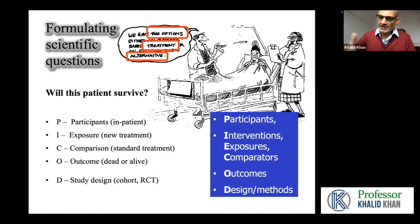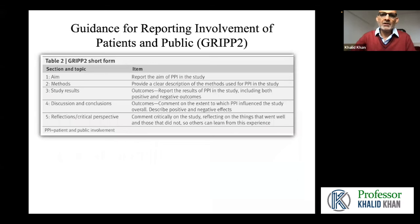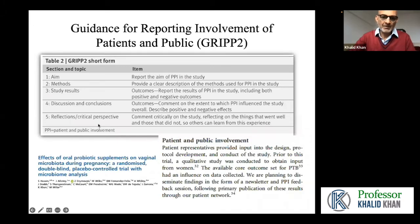What outcomes are important to patients is sometimes better known to patients than to doctors or researchers. In the current day, if you submit a paper to a high-ranking journal, you may be asked to explain how you involved patients and the public in your research. This type of engagement needs to be presented according to a checklist called GRIP2. Here is an example paper that writes in the methods section how patients and the public were involved in the trial.